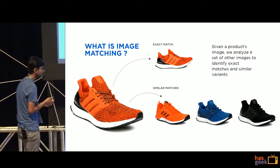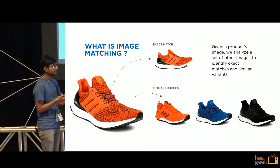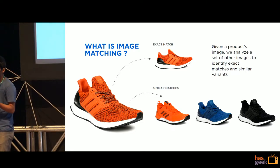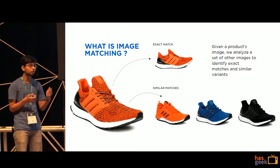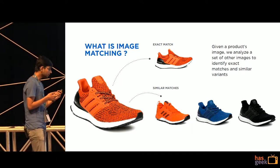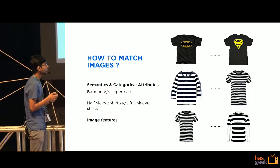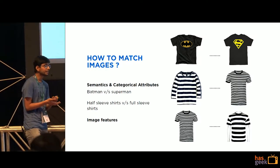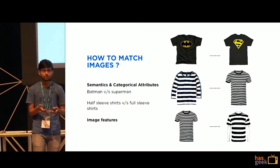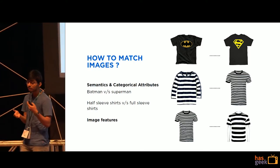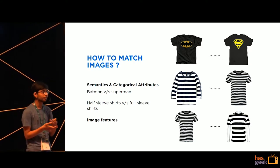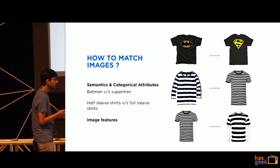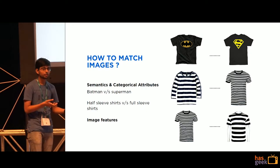So, what is image matching? Given millions of products listed across different e-commerce sites, we find products which share similar or exactly the same looking images as a given seed product. The overall image matching process can be divided into two subcategories: identifying semantic attributes associated with an image — like what type of sleeves or neck type is present — and categorical aspects, like whether it belongs to a Batman category or Superman category.